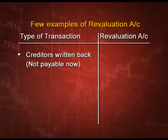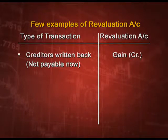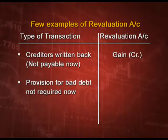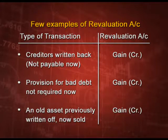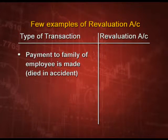If creditors are written back, that means they are not payable now — it is a gain, so it will come on the credit side of the revaluation account. If provision for bad debt is not required now, the liability is coming down, so it is again a gain — credit side. If an old asset previously written off is now sold and you get some money, it is again a gain — credit to the revaluation account. If payment to the family of an employee who died in an accident is made, this is a loss and will be debited to the revaluation account.